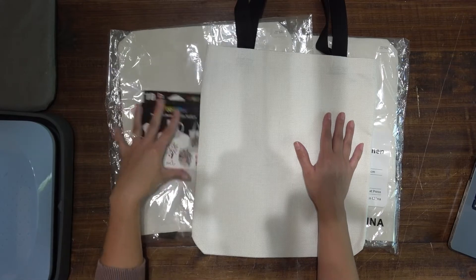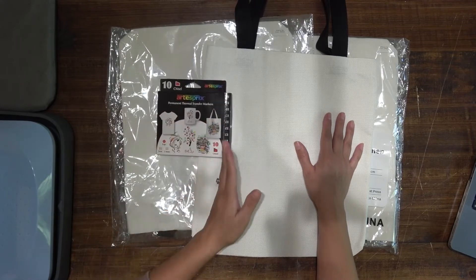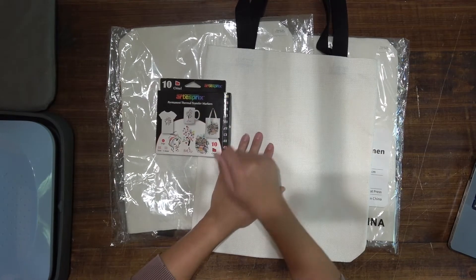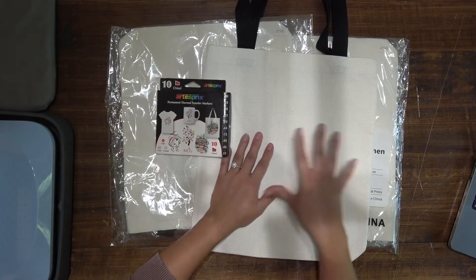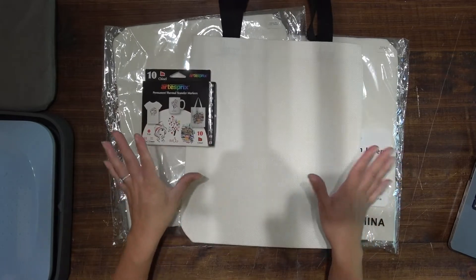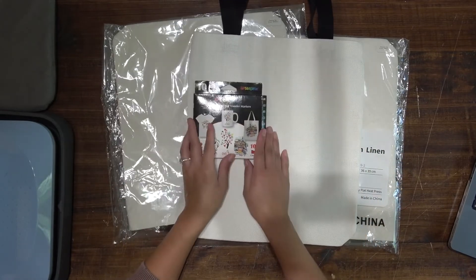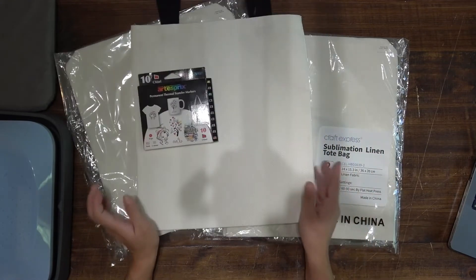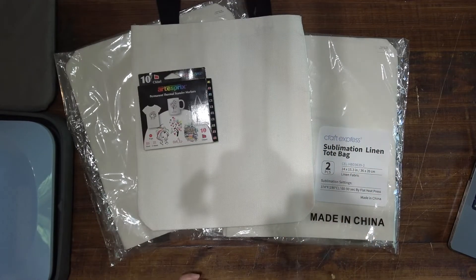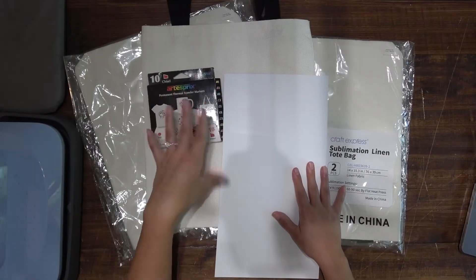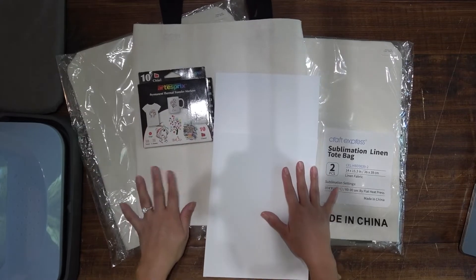Once I get done doing that, hopefully these markers will be perfect for my idea that I have and then after I sublimate on there, I'm just going to HTV a saying or her name or something like that on here, but first I want to try and experiment with these markers right here and get a plain white tote looking like notebook paper. So I can't imagine that this is going to take forever, just this portion of making this tote into a notebook.